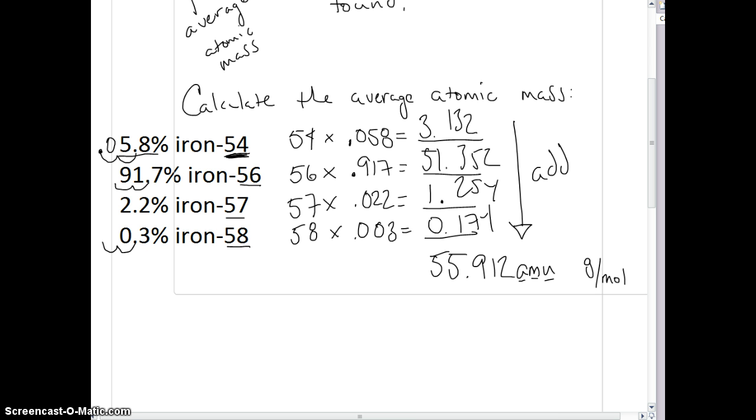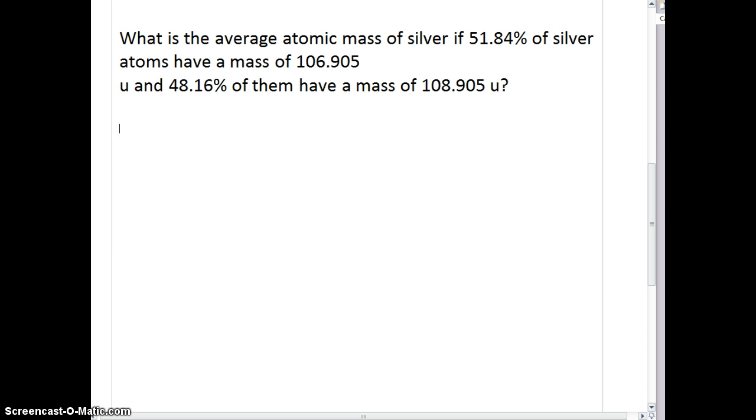Let's do one more problem here, and then I'm going to give you some practice problems to do by yourself. Okay, so we're back. Now, we have this problem here, which is exactly the same type of problem. They're just giving it to us in a slightly different format. So it says, what is the average atomic mass of silver? If 51.84% of silver atoms have a mass of 106.905, and 48.16% of them have a mass of 108.95.